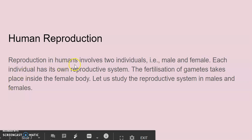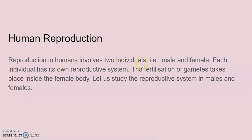Reproduction in humans involves two individuals. Out of these, one should be male and the second should be female. Each individual has its own reproductive system. Gametes are those cells which take part in reproduction. The fertilization of gametes takes place inside the female body, so the type of fertilization in human reproduction is internal fertilization.